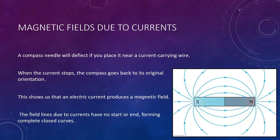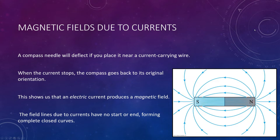The field lines due to currents technically have no start or end — they form complete circles or at least closed curves. That seems counter to what we discussed in the previous lecture, where magnetic field lines start on a north pole and end on a south pole. But technically, even in a magnet we form completely closed loops; we just don't see it because it's within the magnet itself, going inside and back through to the north side. So we have closed loops of magnetic field lines.